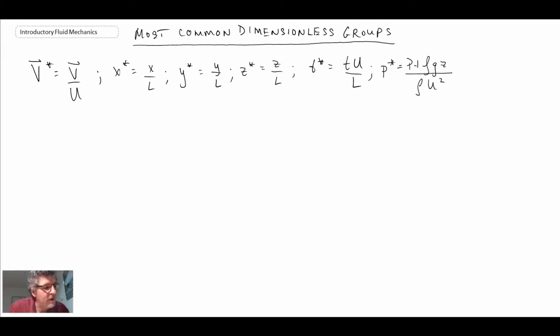If you were to take the Navier-Stokes equations and make substitutions for velocities, length scales, time, and pressure, and replace everything with the star terms, we would end up with an equation that looks something like this. This would be our total or substantial derivative.